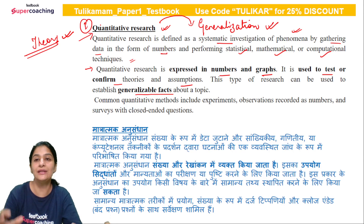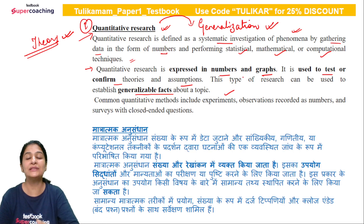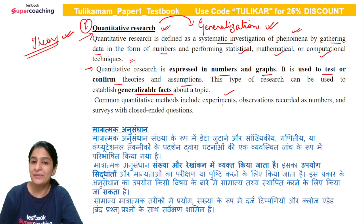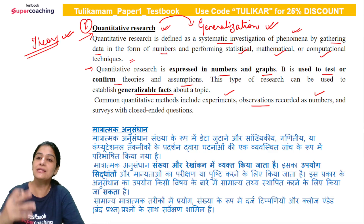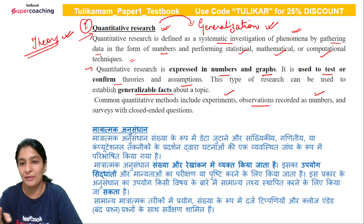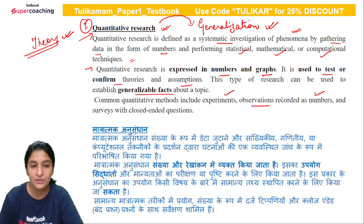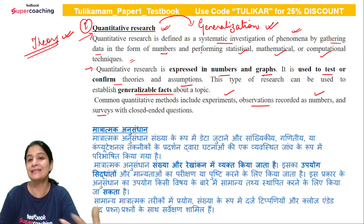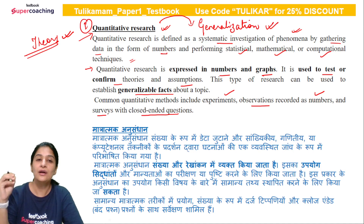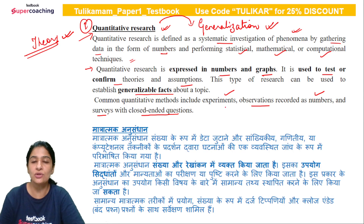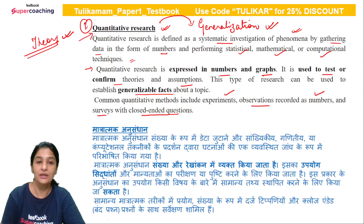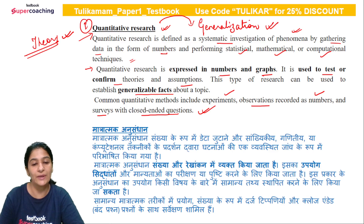Common quantitative research methods include experimental research — the most basic method. We can conduct experiments, or record observations as numbers. Note: observation can be recorded as numbers (quantitative) or as phenomena/descriptions (qualitative). We can also have surveys — such as census surveys — where questions are always closed-ended. Closed-ended questions limit the response to yes/no or options, which are assigned numbers for further calculation. In qualitative research, open-ended questions are used instead.